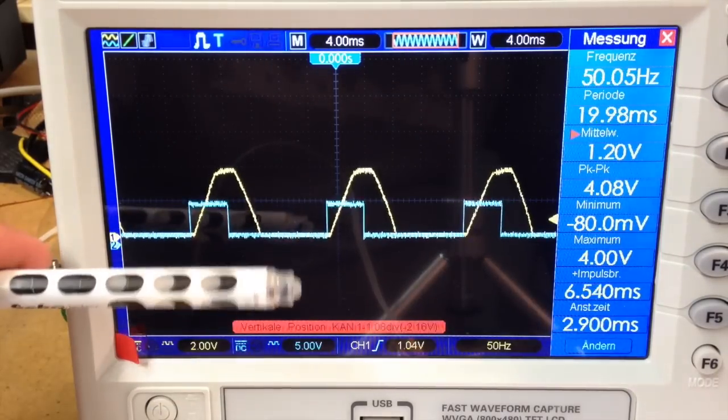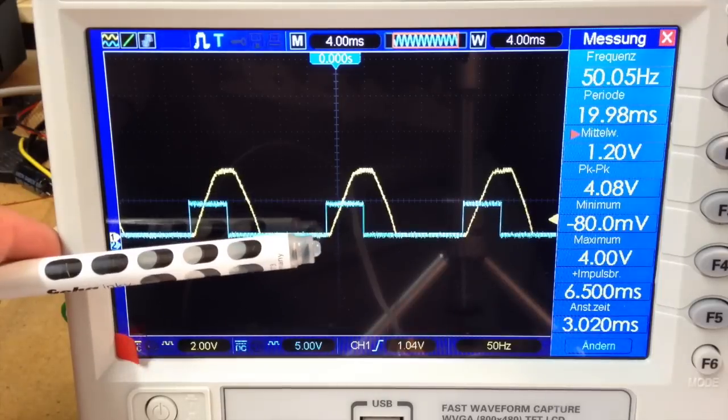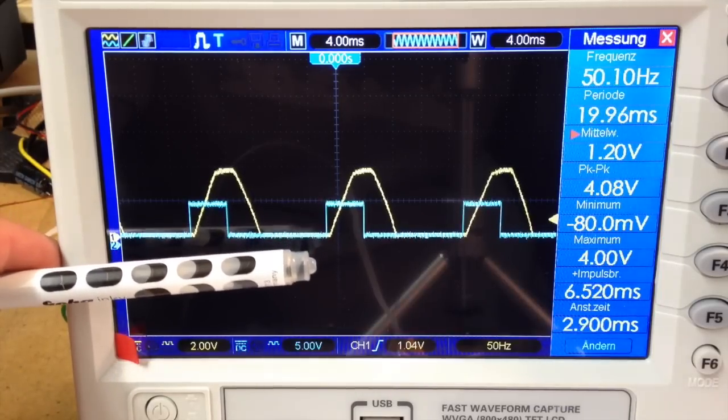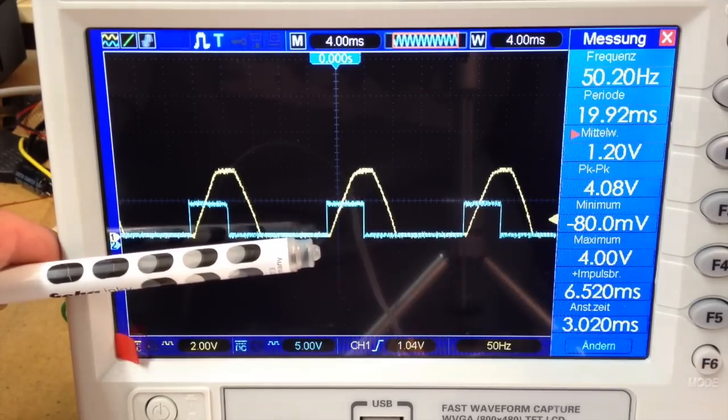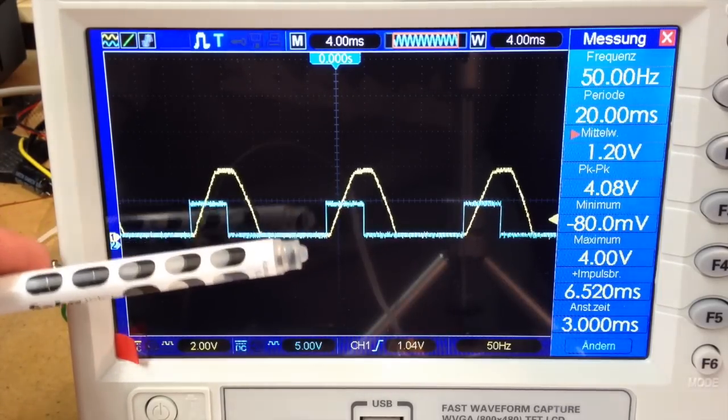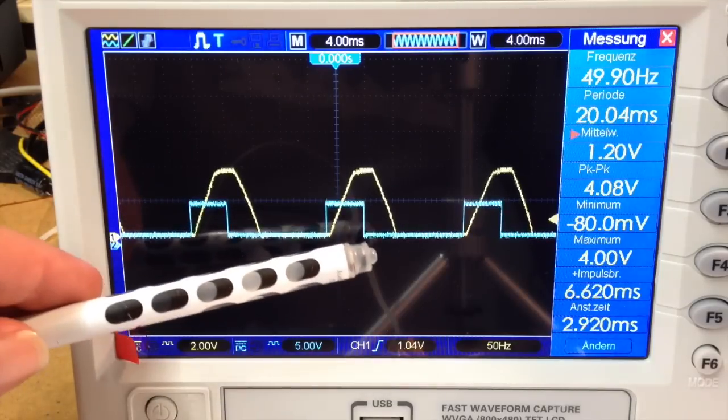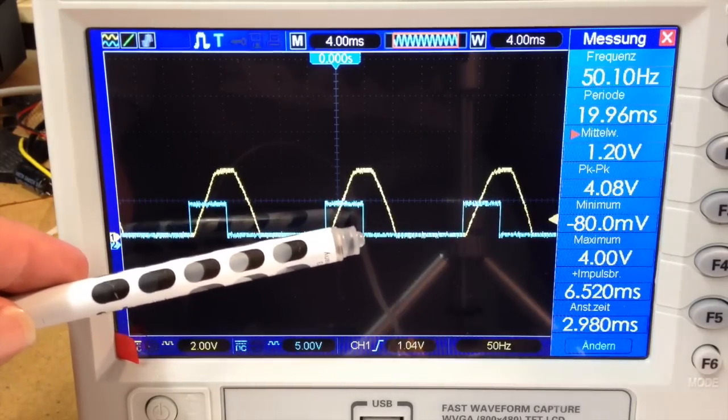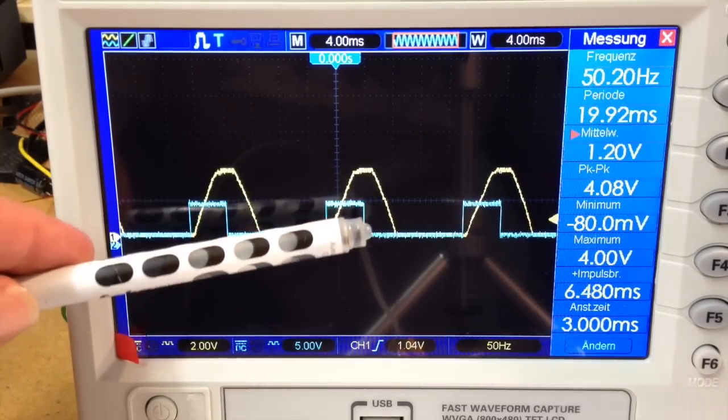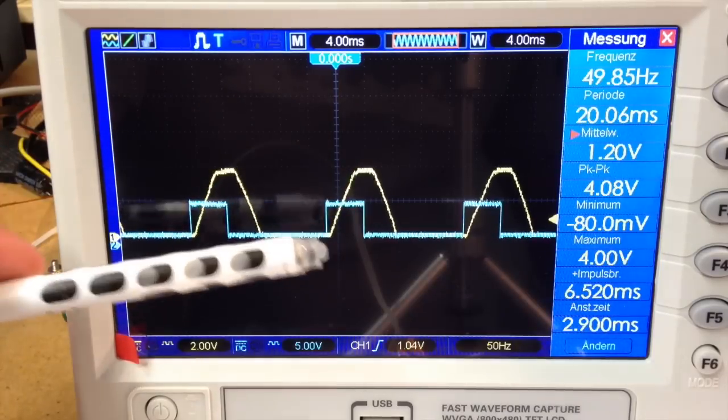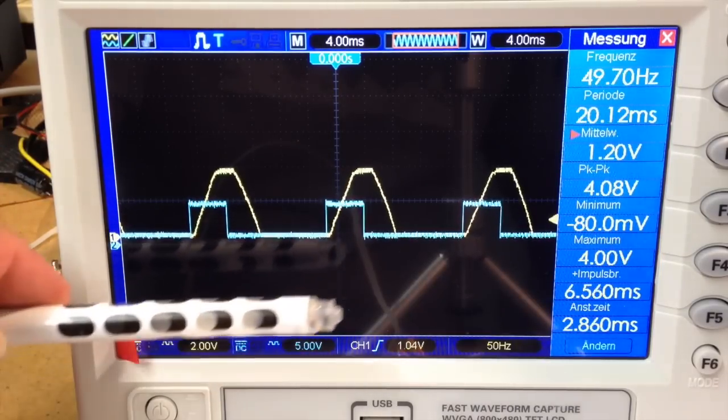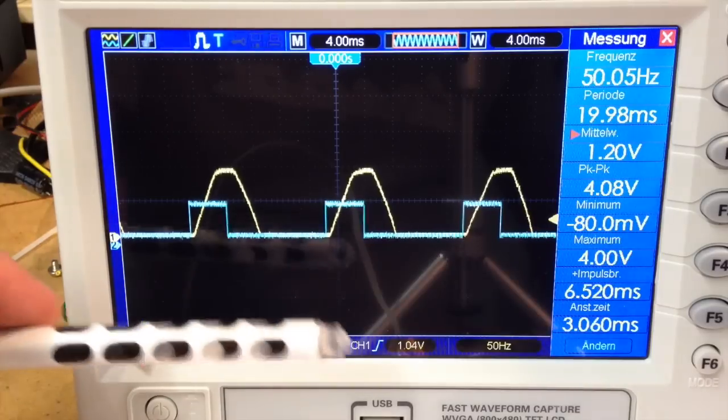You can see that I have a little bit of preload on the solid state relay to make sure that it turns on at the next zero crossing. You can also see that I've got a duty cycle set of about 50% of the first wave, which is about 20% of all power.